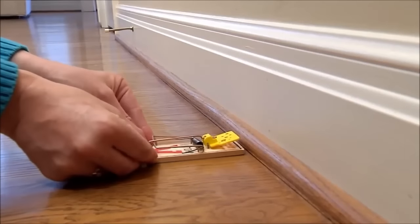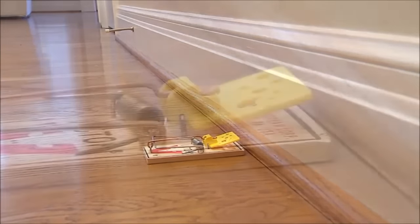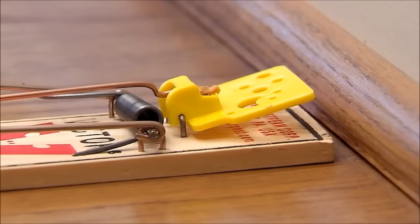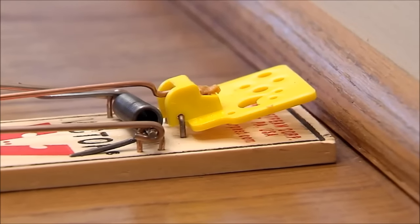Place the trap where you've seen signs of rodent activity or along the wall where rodents primarily travel. The end of the trap where the yellow petal is baited should be placed flush against the wall.